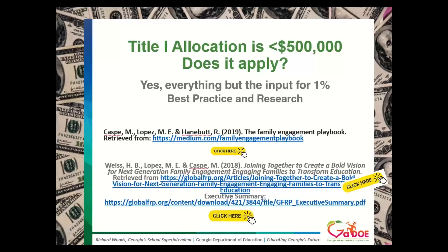We wanted to remind everybody — and if you're a parent engagement person here and your Title I director isn't on the presentation, please share this with them. We wanted to remind everyone that if your allocation is below the $500,000 that Mandy mentioned, that 1% of input and how you spend it doesn't apply, but everything else does. So if you're below that threshold, you'll still want to do the parent engagement program and policies and plans.